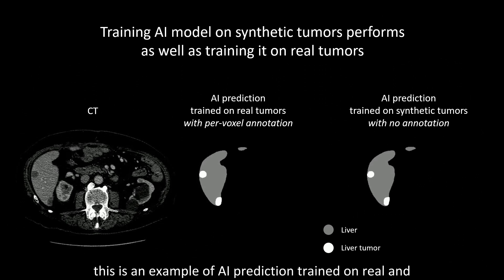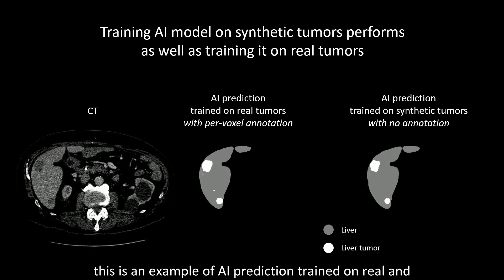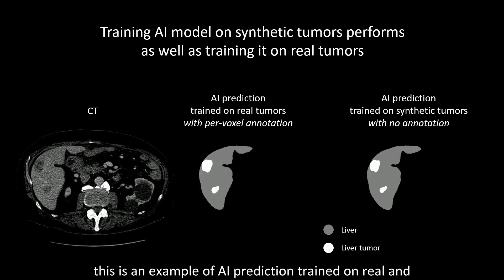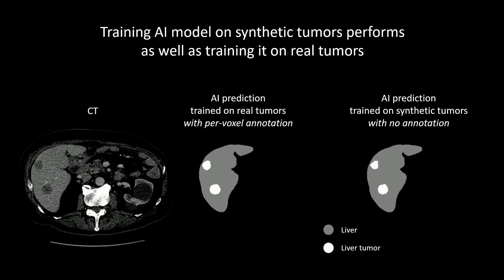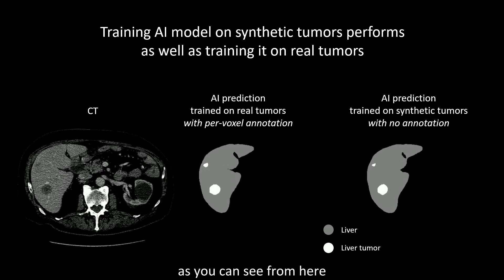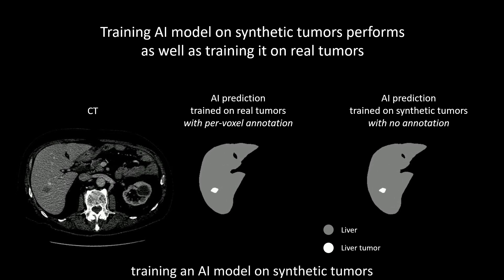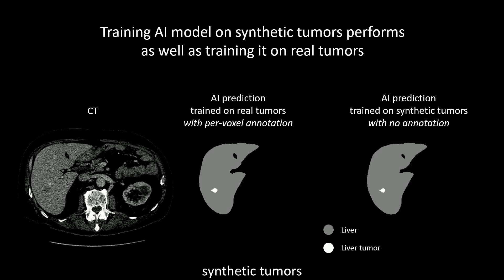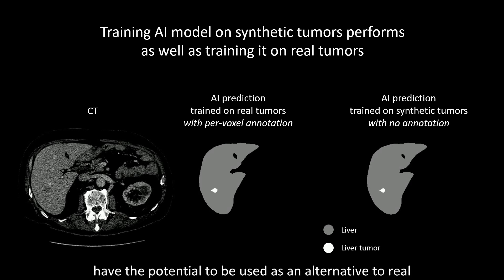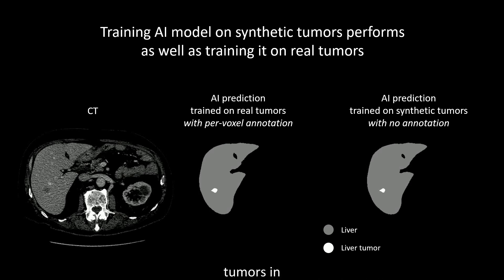This is an example of AI prediction trained on real and synthetic tumors. As you can see, training an AI model on synthetic tumors performs as well as training it on real tumors, highlighting that synthetic tumors have the potential to be used as an alternative to real tumors in training AI models.